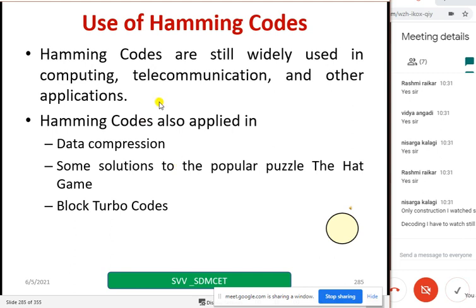Hamming codes are used in many applications. To name a few: data compression, solutions to the popular puzzle the hat game, and even in turbo codes and block turbo codes. We'll see turbo codes later if it is there in the last topic. We'll spend a little time on that. Otherwise, remember turbo codes are also used in many applications.